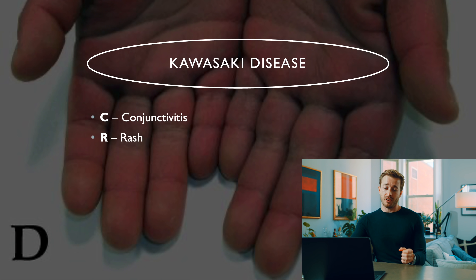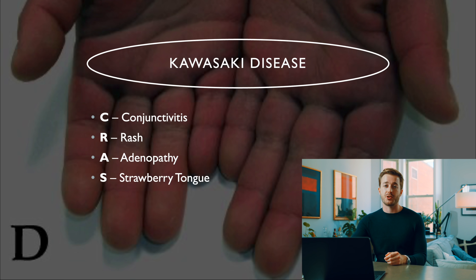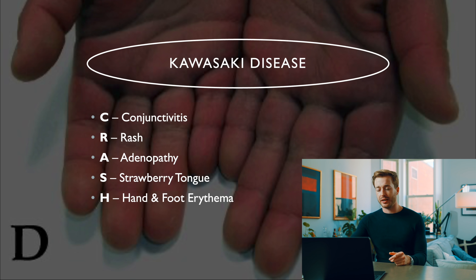The next mnemonic is CRASH AND BURN for Kawasaki disease — a condition that affects kids usually under five and can cause coronary heart disease. C is conjunctivitis, R is rash, A is adenopathy (swollen lymph nodes), S is strawberry tongue, H is hand and foot erythema (redness), and B is burn fever.